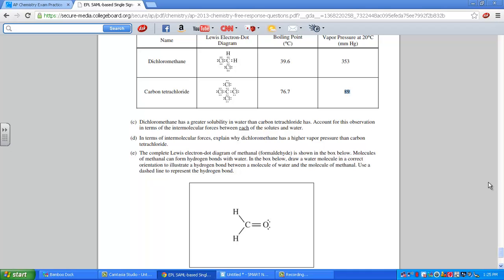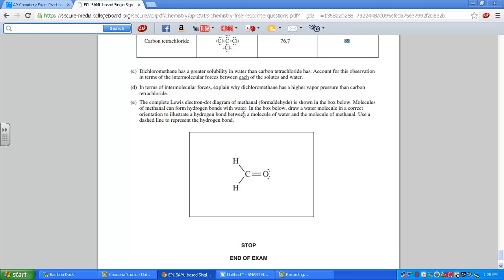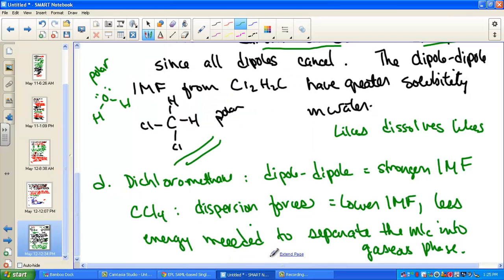I think there's one more. Let's take a read here. Last part of our last question. We're looking at a structure. Complete Lewis electron diagram of methanol. Formaldehyde, as its common name, is drawn in the box below. So we have this carbonyl group here, C double bond O, two electron pairs. Molecules of this compound can form hydrogen bonds with water. In this box, draw a water molecule in a correct orientation to show a hydrogen bond between a molecule of methanol and a water molecule. Use the dashed line to represent the hydrogen bonding. So pretty easy, really. We just want to show how one structure is attracted to the other.